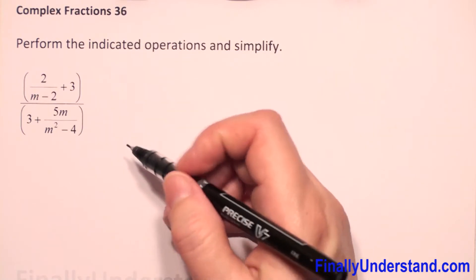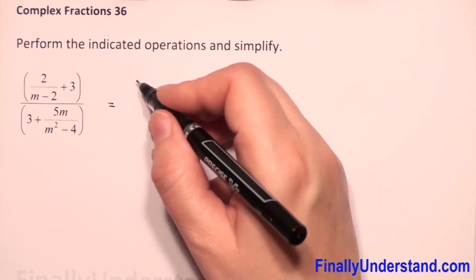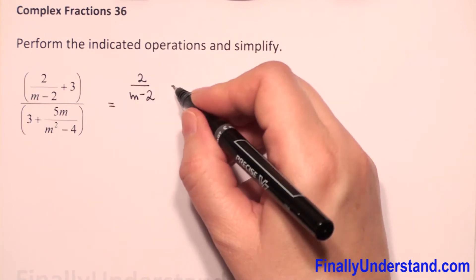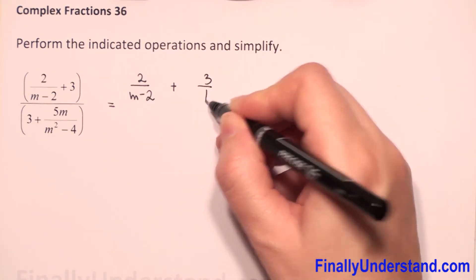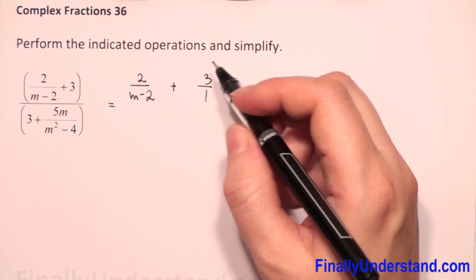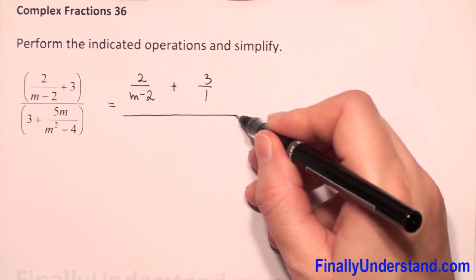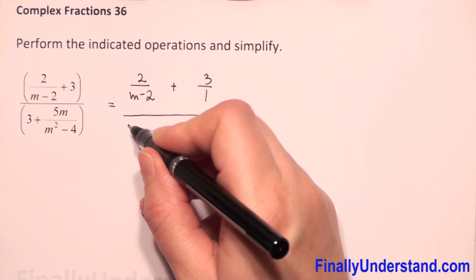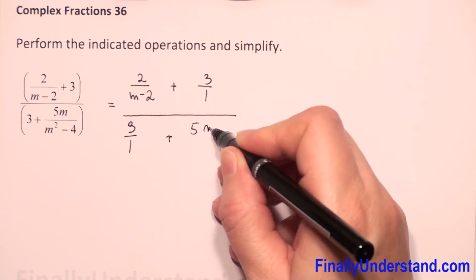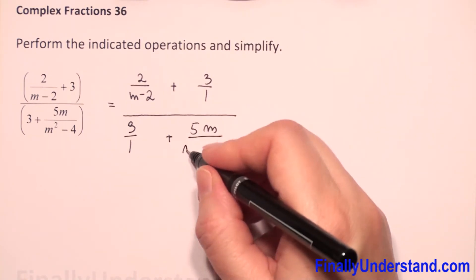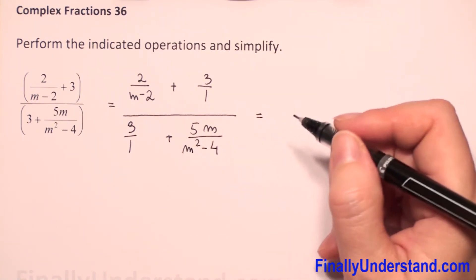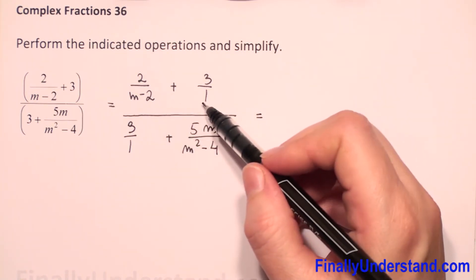In the denominator we have 2 over (m minus 2) and we have 3, so 3 we can write as 3 over 1 — it's still the same 3 but now we have a fraction. The same we will do with the numerator: we have 3, so I will put 3 over 1, and we have plus 5m over (m squared minus 4).